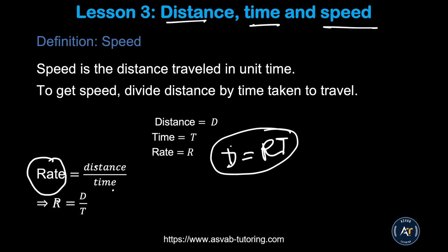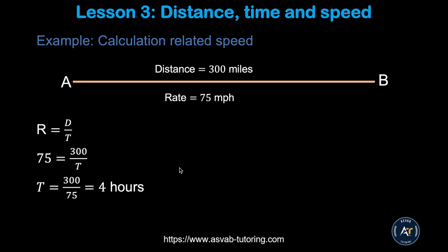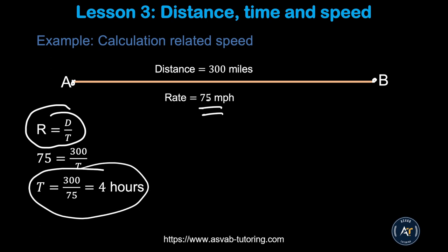You also need this formula for mechanical comprehension if you have the ASVAB test or ASTB. For the AFOQT you don't need that, but you do need this concept. Let's do a problem. Say you are driving from point A to point B, which is 300 miles apart. If you drove at 75 miles per hour, how long did it take to go from point A to point B? Rate equals distance over time. Solving gives T equal to 4 hours.